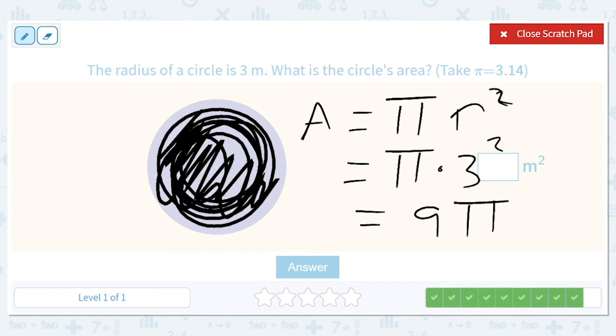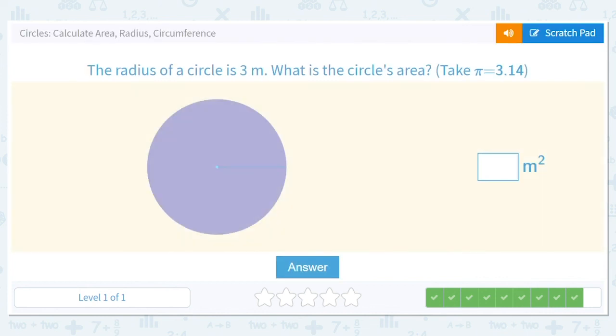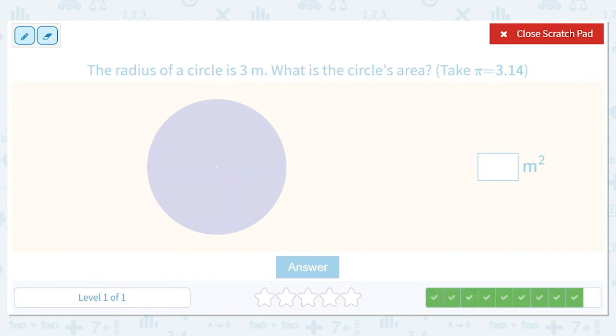So what we do is we do 9, 3.14 times 9. So that's going to be a 6, it's going to be a 3 here, 36. So 9 plus 3 is 12, put a 1 there, 27, 28.26.